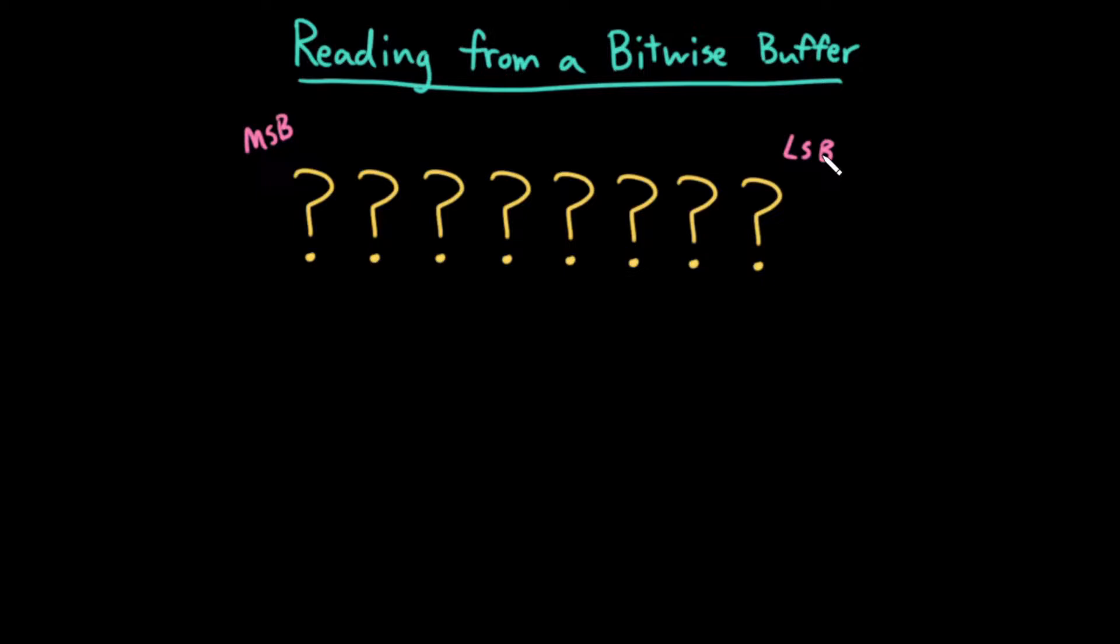For our purposes, we want to be able to read this byte from left to right. I want this bit to be index zero, this one to be index one, two, three, four, five, six, and seven.